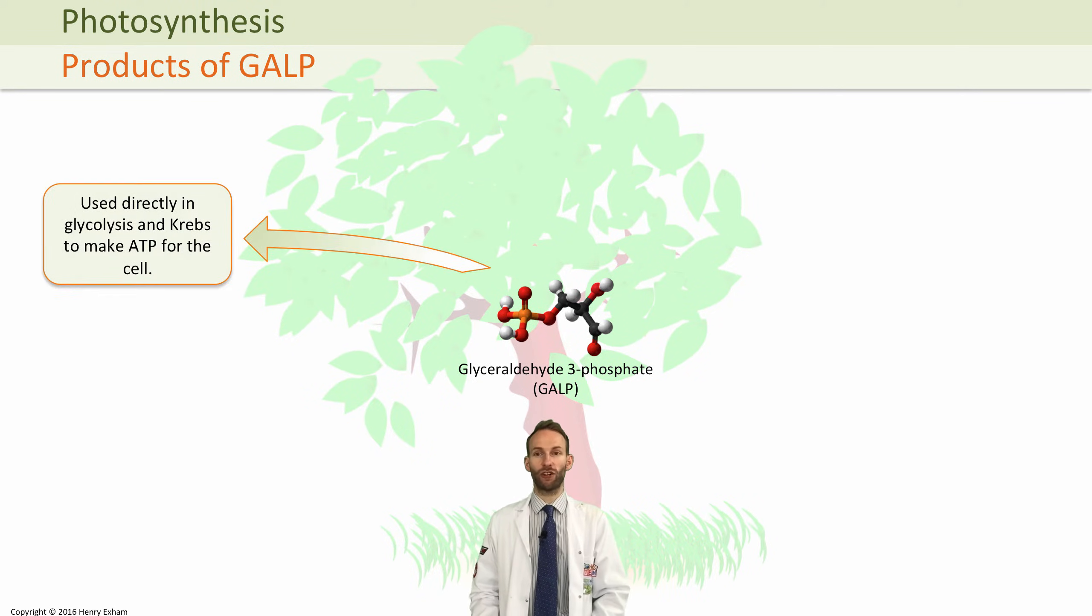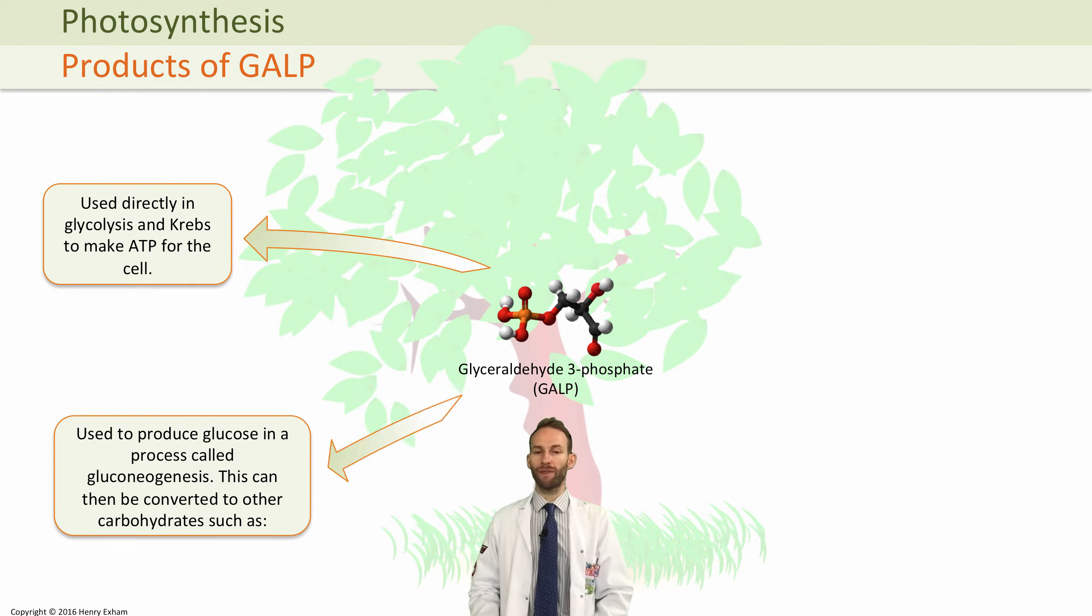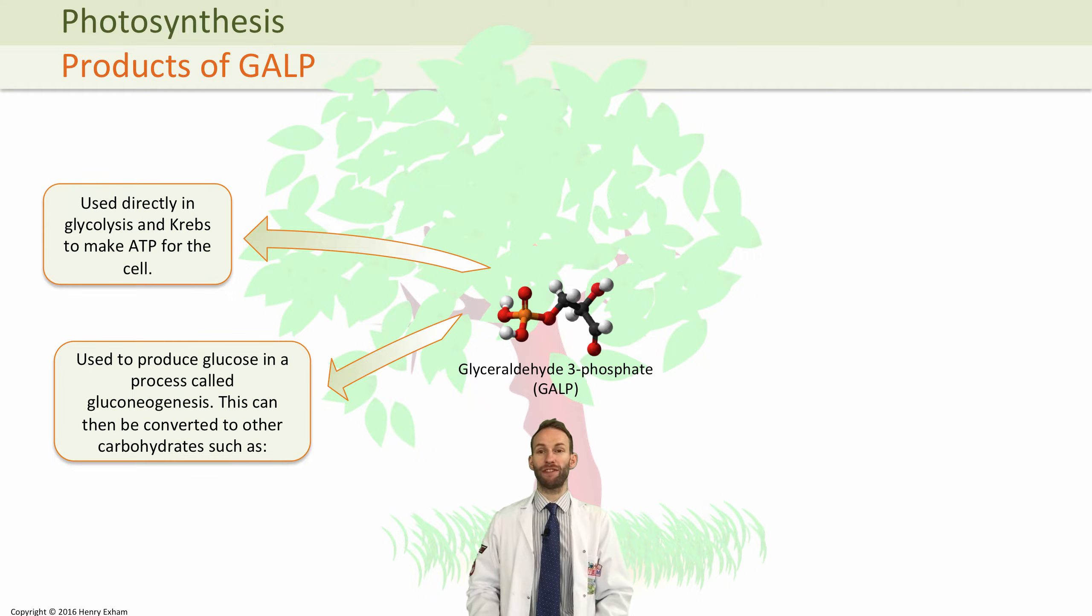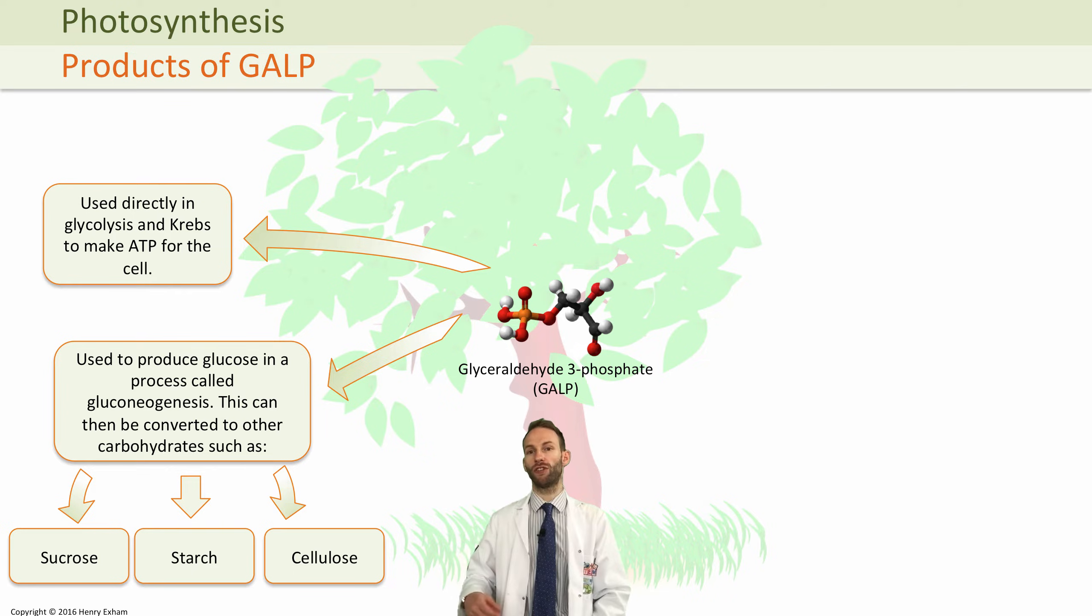Some of it goes straight into glycolysis and the Krebs cycle in respiration to make ATP. The glucose that is made can be further converted into other carbohydrates like starch, sucrose, or cellulose to make cell walls.